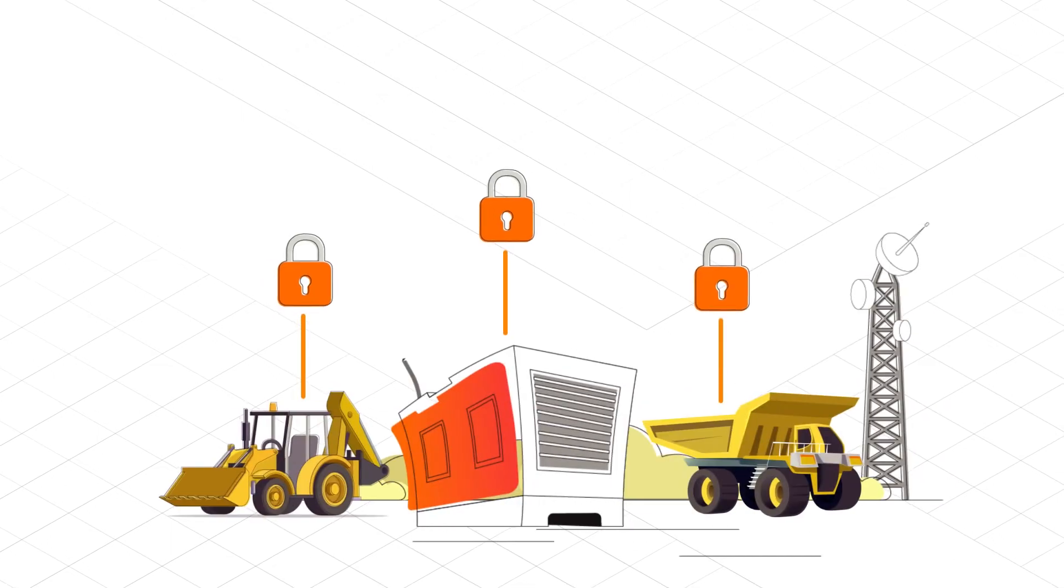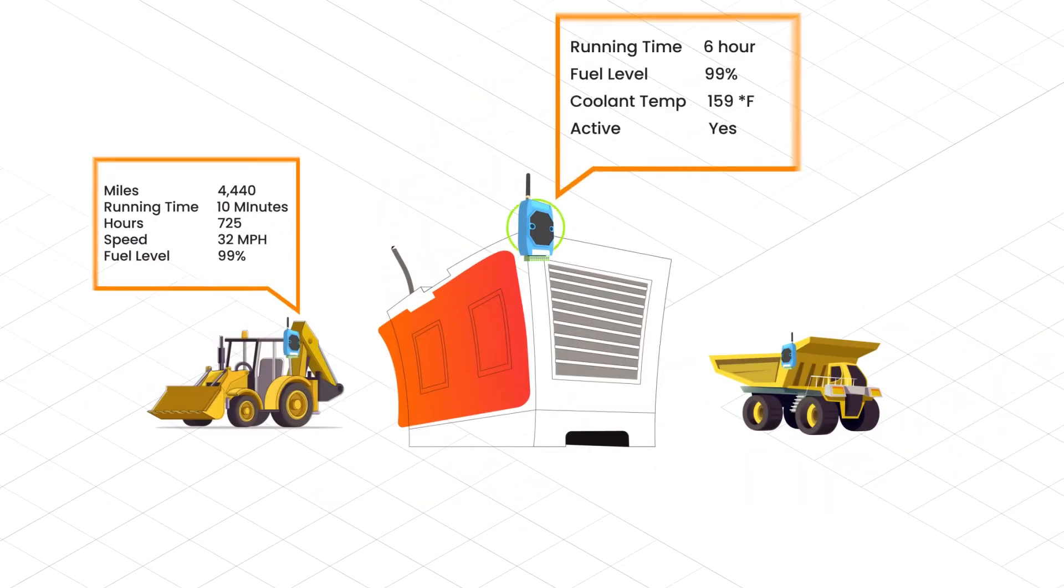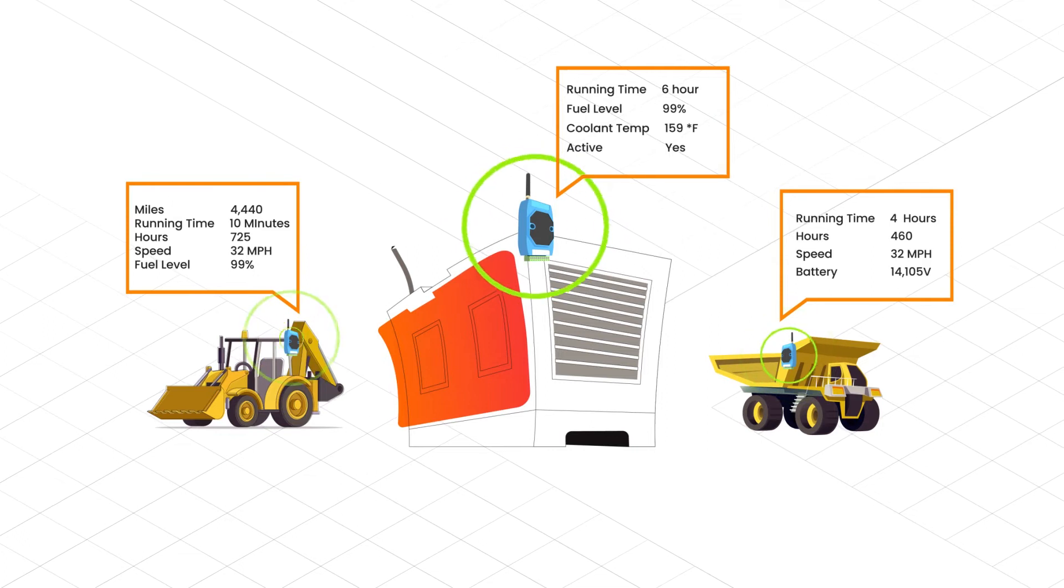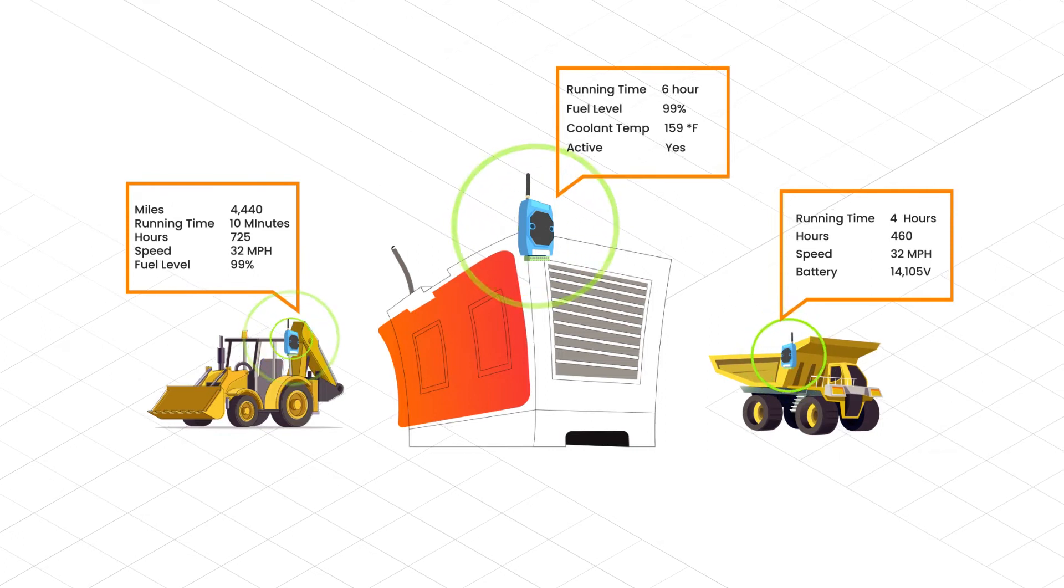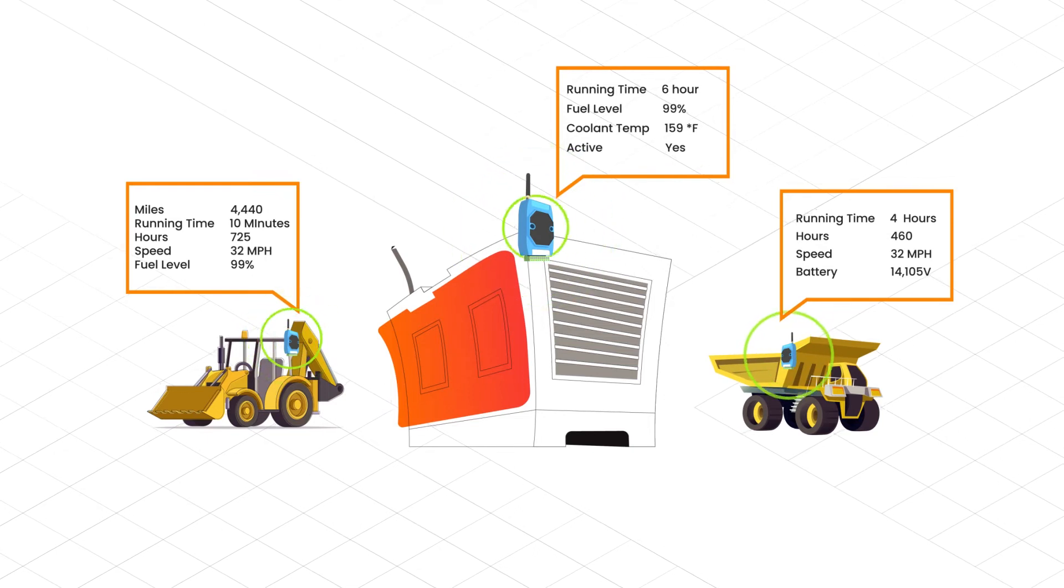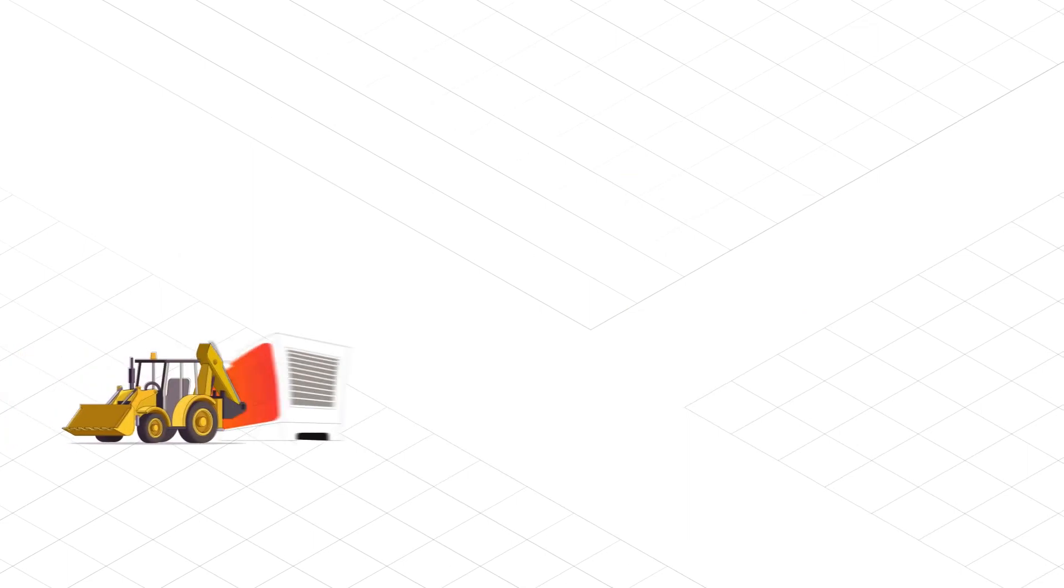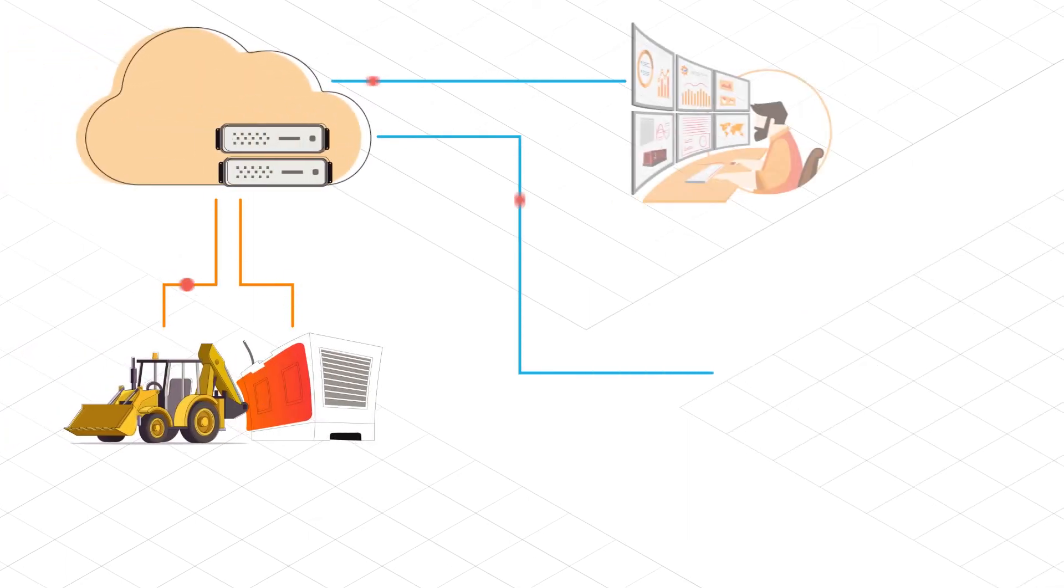Datums lets you lock down your machines and equipment remotely for safety, preventing unauthorized access. Simple plug-and-play technology easily retrofits to your machines, and Datums' IoT technology collects all the valuable information from your equipment like runtime, battery voltage, engine status, fuel level, and real-time location.